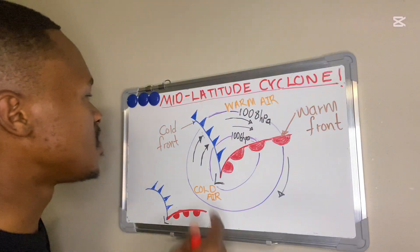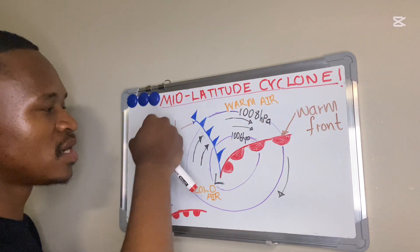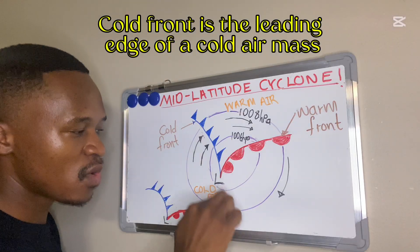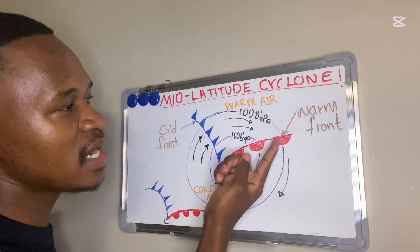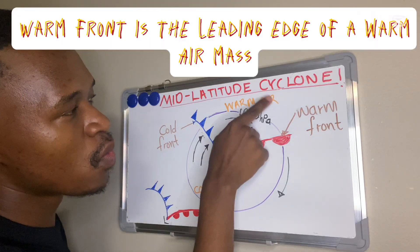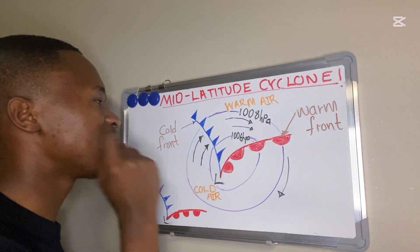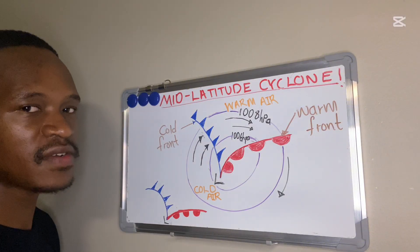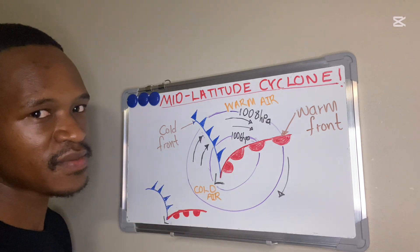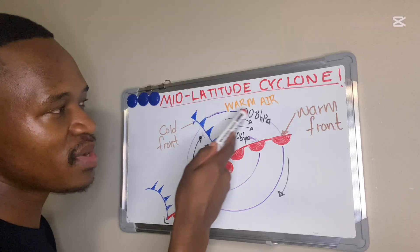Behind the cold front, that's where we find our cold air. The cold front is the leading edge of our cold air mass. And then behind our warm front, that's where we get warm air. So our warm front is the leading edge of a warm air mass.